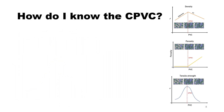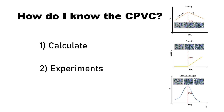From the previous slides you might have gotten an impression of how important it is to know the critical pigment volume concentration of your system. So how do you actually determine it? There are two different ways: you can calculate the CPVC, or you can determine it via experiments.